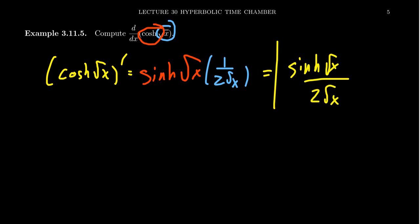There are no further simplifications here. The derivative calculation is really no different from calculating derivatives of trigonometric functions. Just remember: the derivative of sinh is cosh, the derivative of cosh is sinh, and you're going to be just fine.